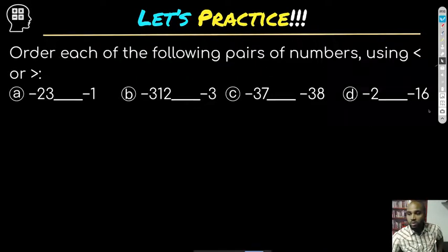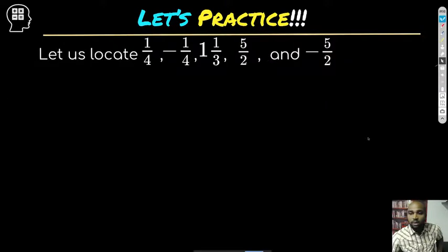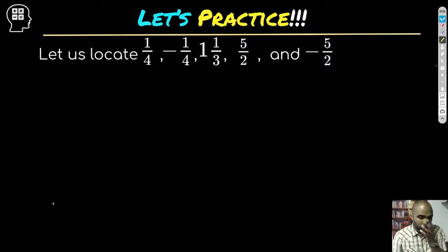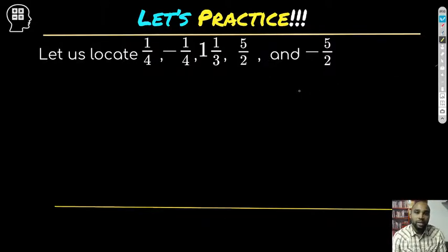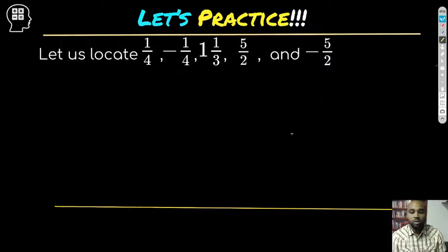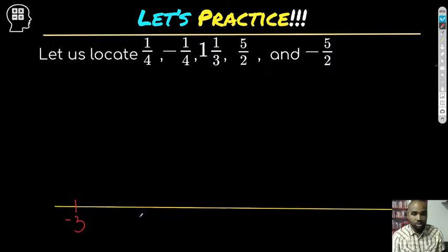This next one is going to include integers less than zero. We have to be careful because negative numbers tend to confuse students — they work under opposite rules. As a number gets bigger negatively, the value gets smaller because you're losing more. So let's look at the range: we're going from negative one fourth to negative five thirds. Let's start at negative three and go all the way up to two.